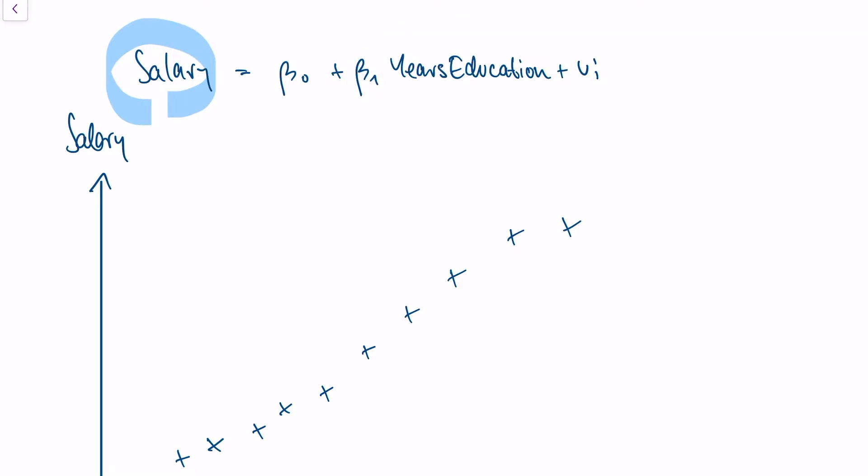Our variable of interest is this beta 1. We want to know if I study for one year longer, if I for instance decide to take a master's degree, how much does this influence my future salary? Let's say the salary five years after I graduate.